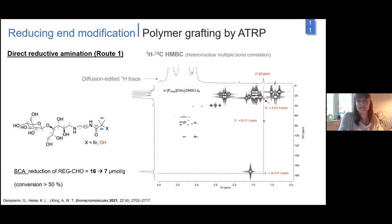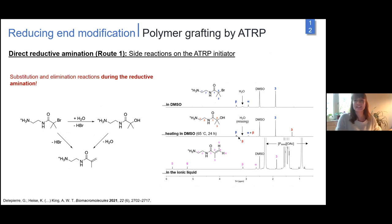We only see signals from covalently attached functionalities. We confirmed we modified our reducing end groups and saw correlation between different units to the end group of the initiator. In parallel, the BCA assay showed reduction of reducing end groups from 16 to 7 micromole per gram, meaning at least 50% conversion. However, the chemical shift was quite a surprise because it wasn't where we expected from the NMR spectrum of our initiator itself.